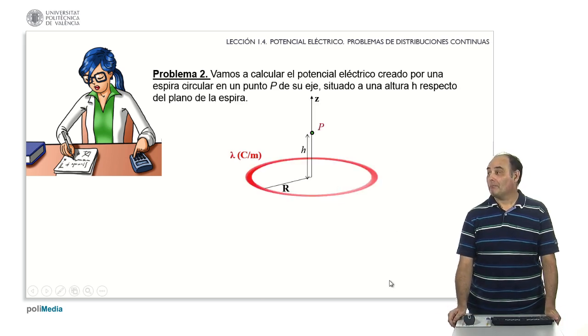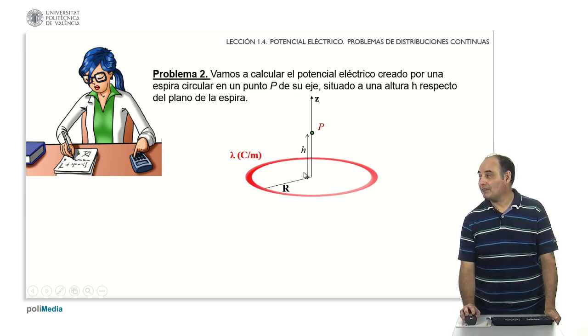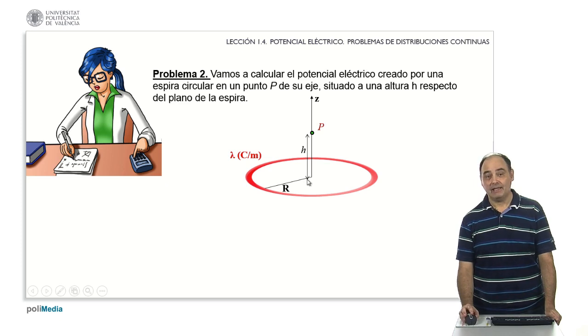Second problem. Let's calculate the electric potential created by a circular loop at a point p on its axis, located at a height h from the plane of the loop. You probably remember that in the theoretical explanations we solved an example like this, only that point p was exactly the origin, the center of the circle.